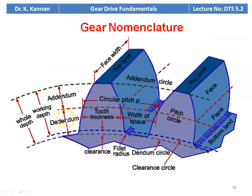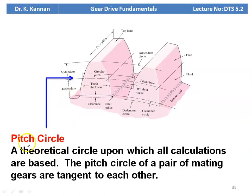We discuss gear nomenclature — there are different parameters in the gear profile: top land, circular pitch, tooth thickness, width of the space, addendum circle, addendum, dedendum, working depth. First, the pitch circle: this circle is called the pitch circle. We also have the tip circle (outer circle) and the base circle. The pitch circle is the theoretical circle upon which all calculations are based. The pitch circles of a pair of mating gears are tangent to each other — there should be a common tangent between the mating gears.